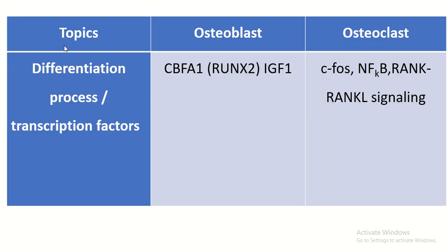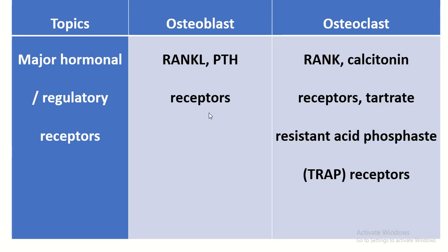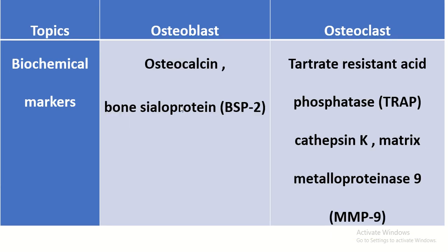The differentiation transcription factors for osteoblast include CBFA1 and IGF1. For osteoclast, the transcription factors are c-Fos and NFkB. The major hormonal or regulatory receptors for osteoblast are RANKL and PTH receptor. For osteoclast: RANKL, calcitonin receptor, and tartrate-resistant acid phosphatase receptor. Biochemical markers for osteoblast are osteocalcin and bone sialoprotein 2; for osteoclast: tartrate-resistant acid phosphatase, cathepsin K, and matrix metalloproteinase 9.